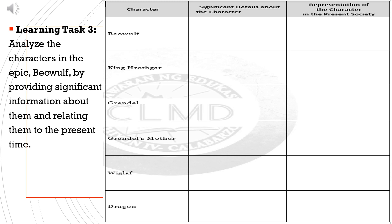Learning Task 3: Analyze the characters in the epic Beowulf by providing significant information about them and relating them to the present time. We have a table with three columns: first, Character; second, Significant Details about the Character; third, Representation of the Character in the Present Society. The characters listed are: Beowulf, King Hrothgar, Grendel, Grendel's Mother, Wigglop, and Dragon.